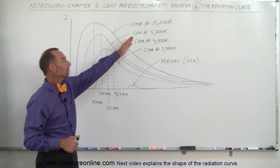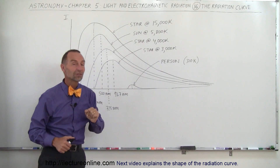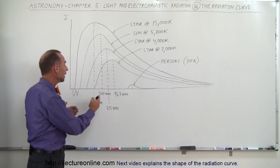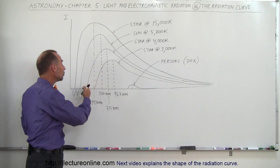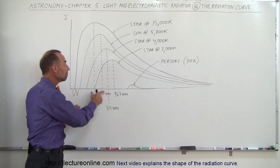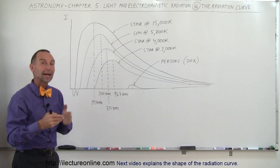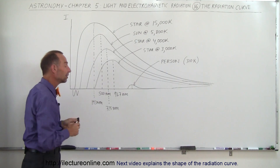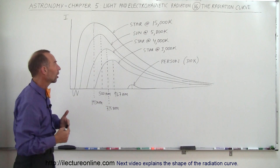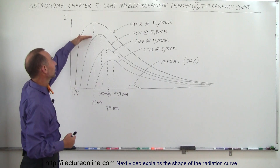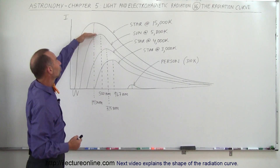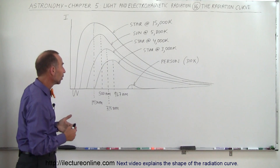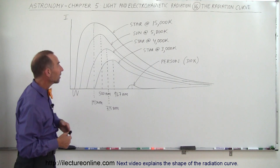Our sun, at 5,800 degrees Kelvin, has a nice medium — it has a little bit of UV coming from the star, but mainly visible light, and the average visible light is around 500 nanometers, making the sun a yellow star. Notice that the intensity is much lower than the 15,000K star — about 100 times lower.